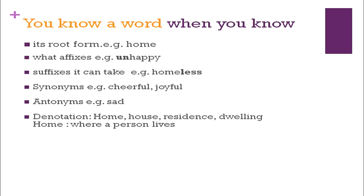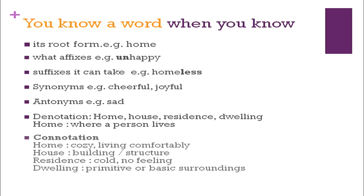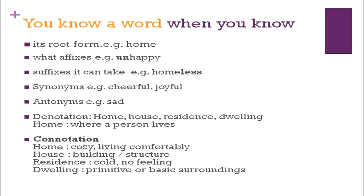Denotation: home, house, residence, dwelling are synonyms of 'home', but the denotative meaning is simply where a person lives — that is its core meaning. Then connotation: when we say 'this is my home', it gives a cozy feeling — I live here and am comfortable. 'House' is just a building or structure. 'Residence' has a cold or distant connotation — this is the residence of so-and-so, suggesting no right to enter. 'Dwelling' implies primitive or basic surroundings. So these are synonyms but they have different connotative meanings.